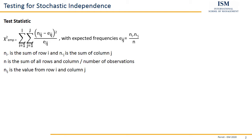In addition, we calculate so-called expected frequencies. For the expected frequencies, we also need the sum of each row and the sum of each column, as well as the overall number of observations. Then for each entry in our contingency table, we multiply the sum of the corresponding row with the sum of the corresponding column and divide by the number of observations. That's what N_I• times N_•J divided by N means.